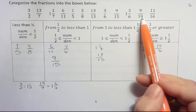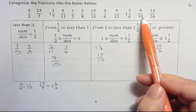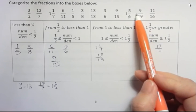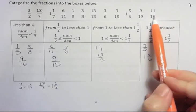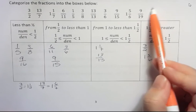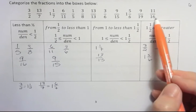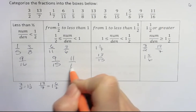9 over 19. Half of 19 is 9.5. This is a little bit less than that. So this is less than a half. And 11 sixteenths. Half of 16 would be 8. This is definitely more than a half, but it's not a whole yet. So it's here in this box.